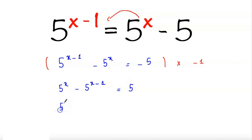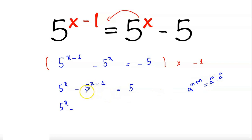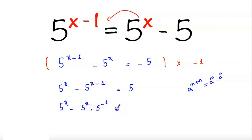So 5 to the power x minus — we know that a to the power m plus n equals a to the power m times a to the power n. So we can write 5 to the power x minus 1 as 5 to the power x multiplied by 5 to the power minus 1, equals 5.